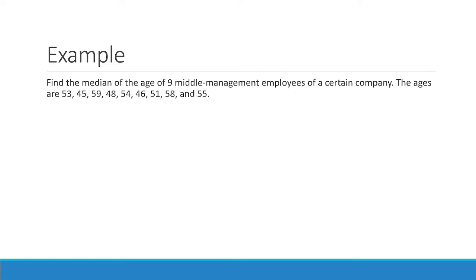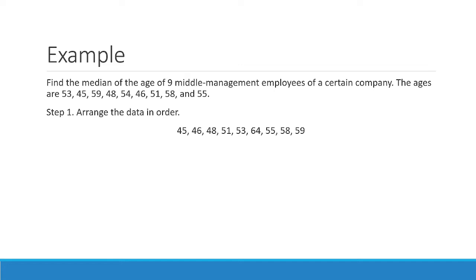I arranged the data to make the data array. We have: 45, 46, 48, 51, 53, 54, 55, 58, and 59. That is our data array. We need to select the middle rank value. With n equal to 9, we substitute into the rank formula: 9 plus 1 equals 10, divided by 2 equals 5. So we need to count to the fifth value.